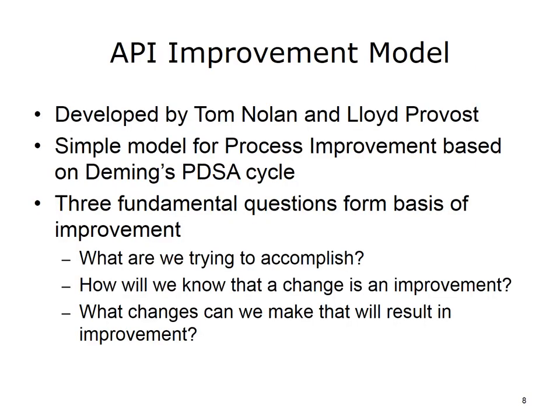The API — Associates for Process Improvement Model — was developed by Tom Nolan and Lloyd Provost. The API model is a simple model, and like so many models for process improvement, it is based on Deming's PDSA, also called the PDCA cycle. The API model uses three fundamental questions that form the basis of improvement: What are we trying to accomplish? How will we know that a change is an improvement? And what changes can we make that will result in improvement? Focus is frequently on small improvements and on testing the results to verify improvement, an incremental approach that undertakes improvement through many small improvements to make big improvement.